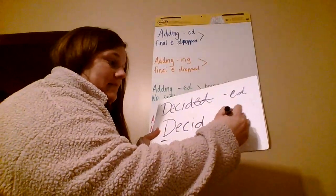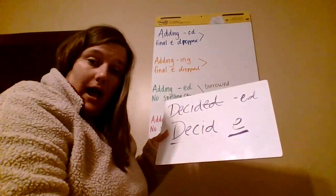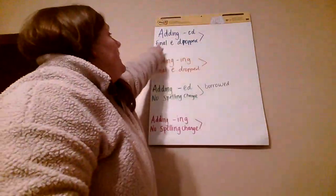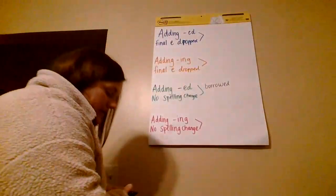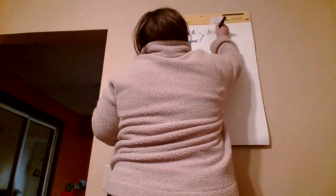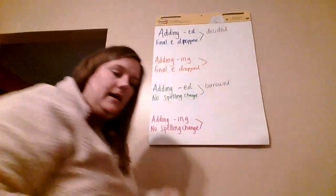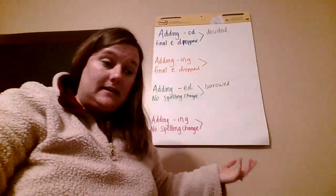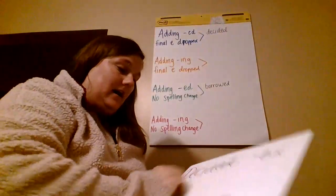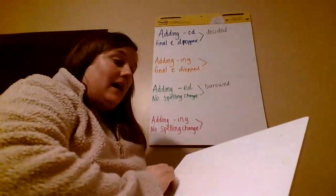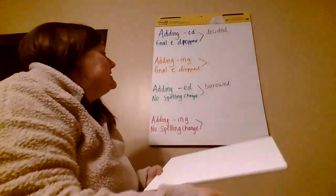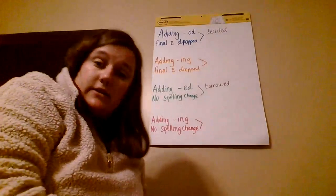You're missing an E — that E has been dropped because you added the ED. So I have that other category: adding ED, final E dropped. See how easy that is? I just need to decide — when I take that ED ending off, is it still spelled correctly? If it's not and it's missing an E, it needs to go in the final E dropped column. If it is spelled correctly, then it's no spelling change.